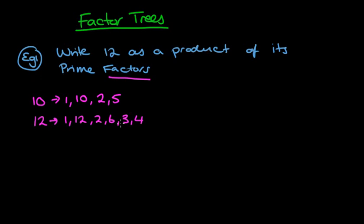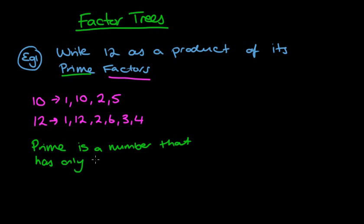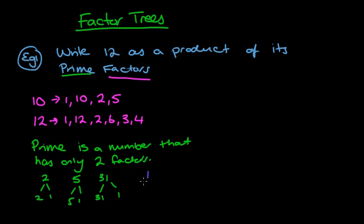The other word is 'prime'. A prime number is a number that has only two factors. Can you think of any prime numbers? A couple of easy ones: 2 has factors 2 and 1; 5 has factors 5 and 1; 31 has factors 31 and 1. Quick question: is the number 1 a prime number? Hopefully you said no — because a prime number has two factors, whereas 1 only has one factor, so it's not a prime number.